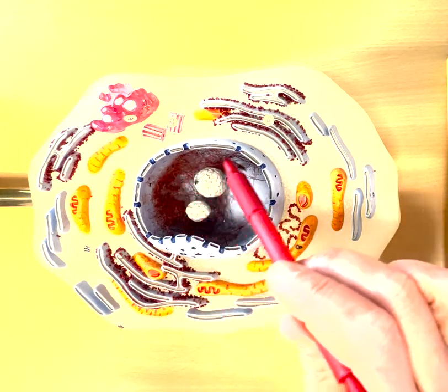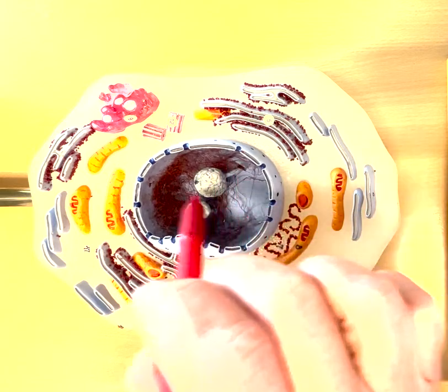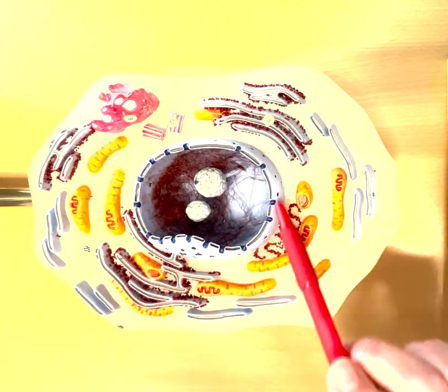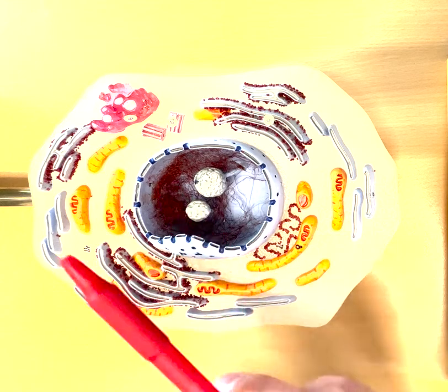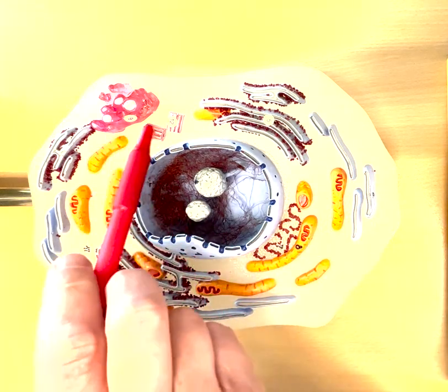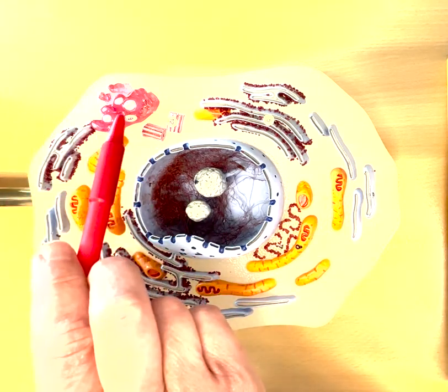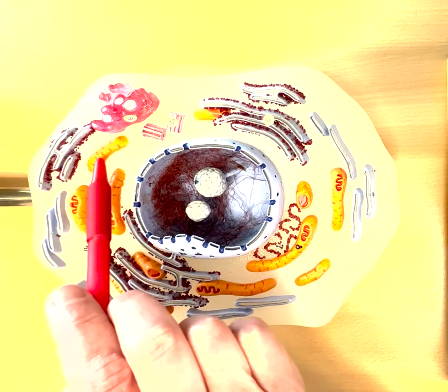So nucleoli, chromosomes, all of this red stuff in here. This is the nuclear membrane with the nuclear pores. Whole thing is the nucleus. Then we have the centrioles, the Golgi body, rough ER, mitochondria.